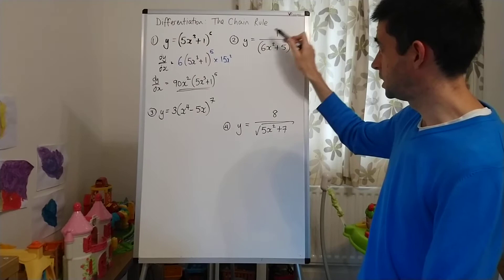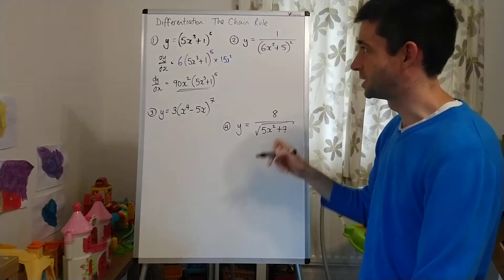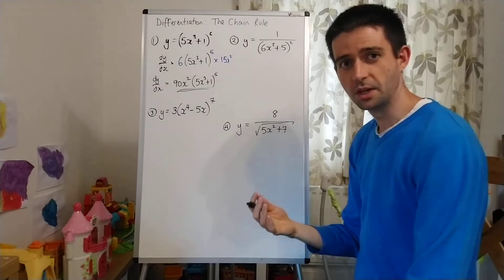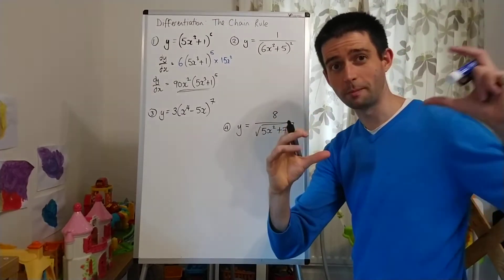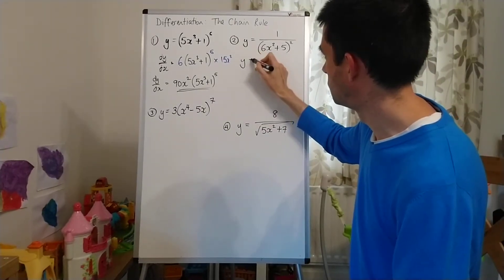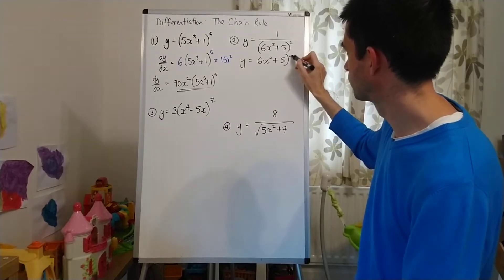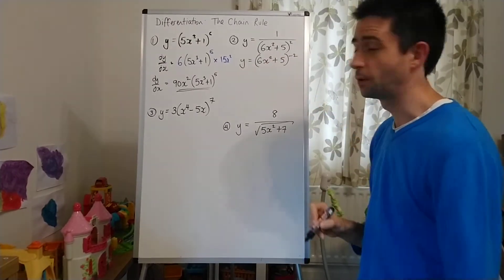OK, number two. You'll notice that this is different. 1 over (6x²+5)². So the first thing I need to do is I need to write it so it's a function to a power rather than as a fraction. And how I'm going to do that is I'm going to write that y equals (6x²+5)^(-2).